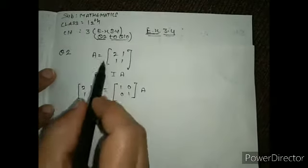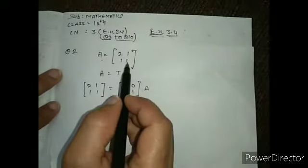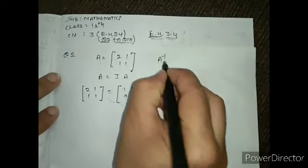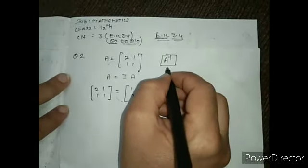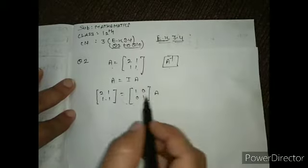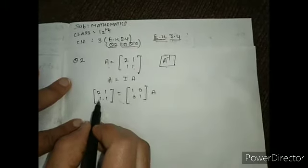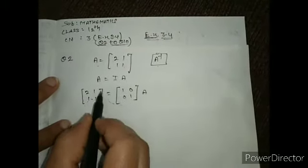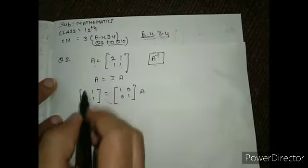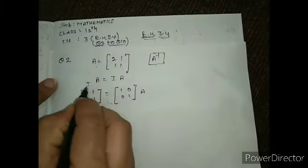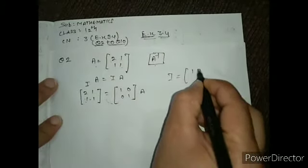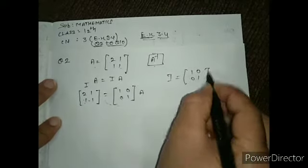In question number 2, given that A is [2, 1; _, _], we have to find A inverse by elementary operations. In elementary operations, we will convert this matrix into an identity matrix. The identity matrix is [1, 0; 0, 1].